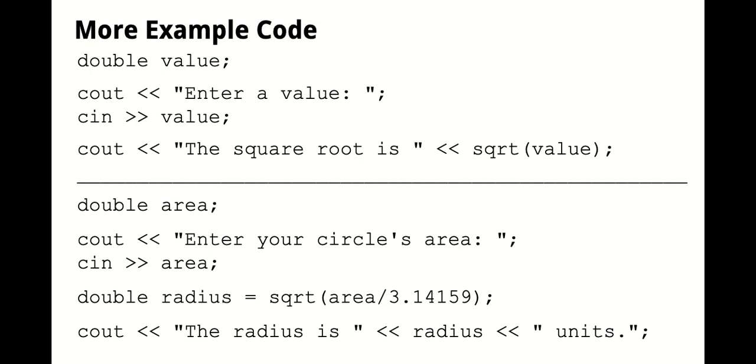You can also plug in the name of a variable when you're calling a function. So the first example here shows entering a value from the user, and then we'll plug in that value into the square root function. So again, it doesn't need to be a constant like the last slide, it can definitely be the name of a variable that has a value stored in it. And you can even do more complicated expressions in a function call as well. So this next example asks for the area of a circle and then backtracks to the radius, divide by pi, and then take the square root of that value, which is what you're seeing in that second code example there.